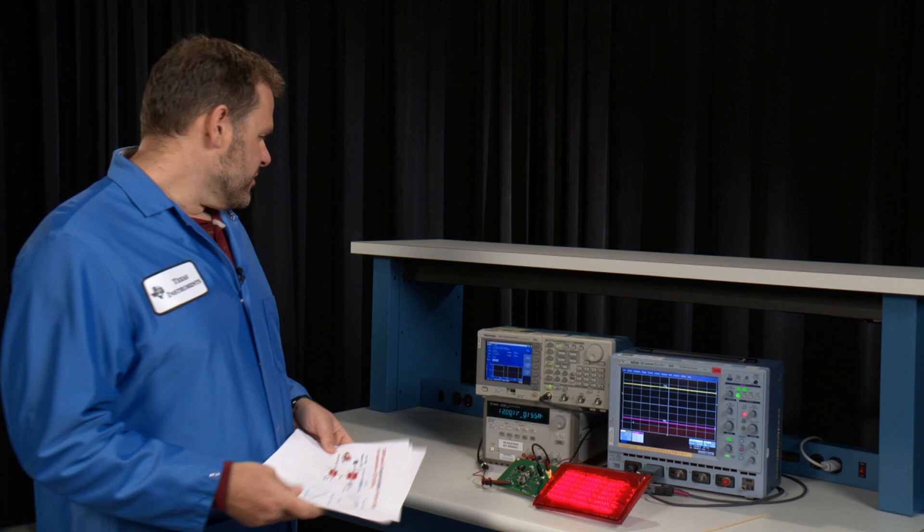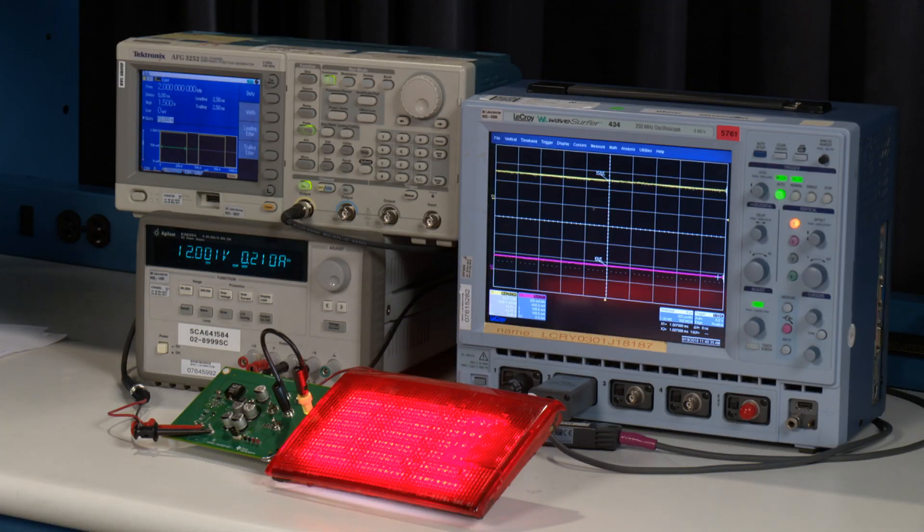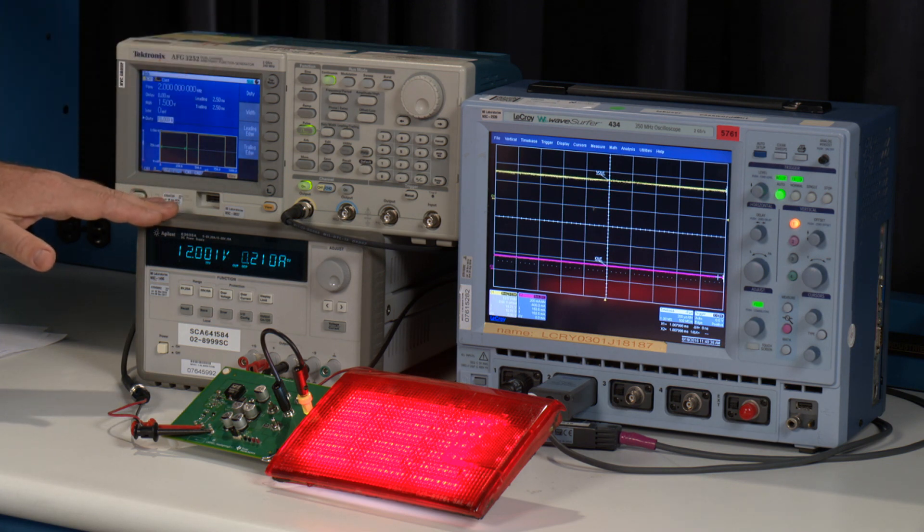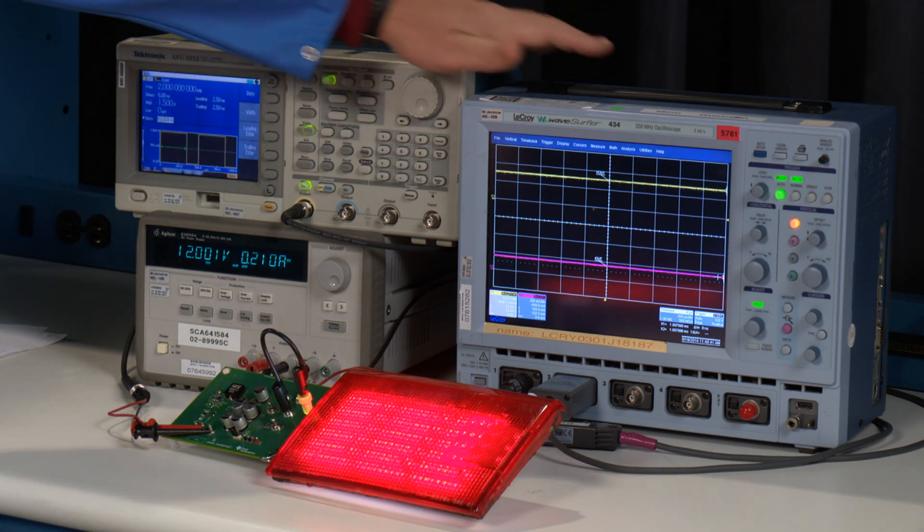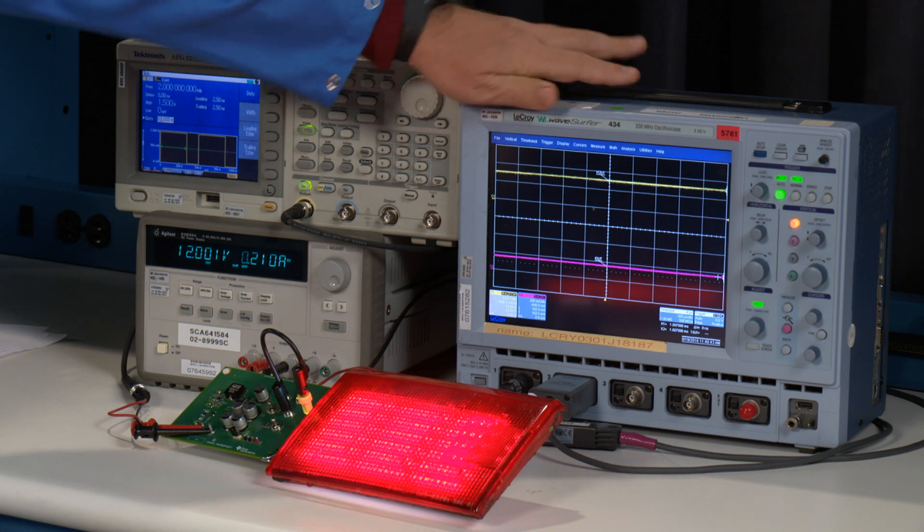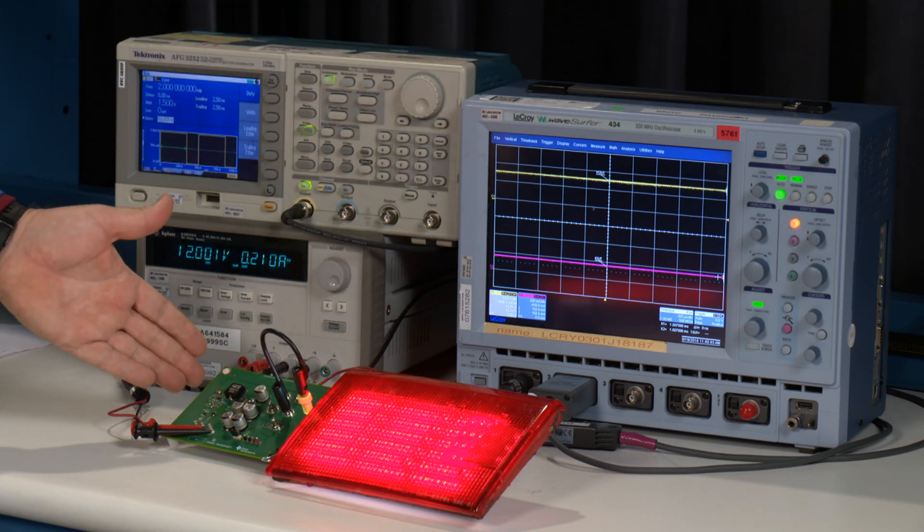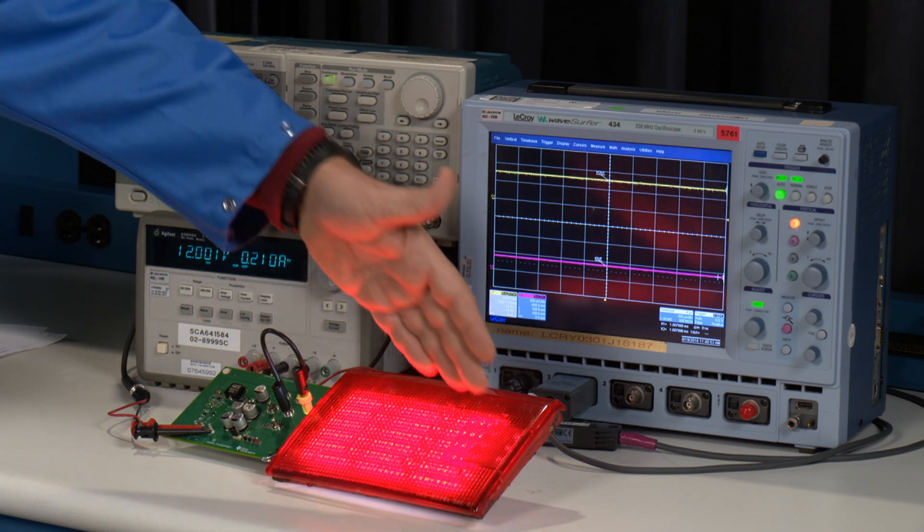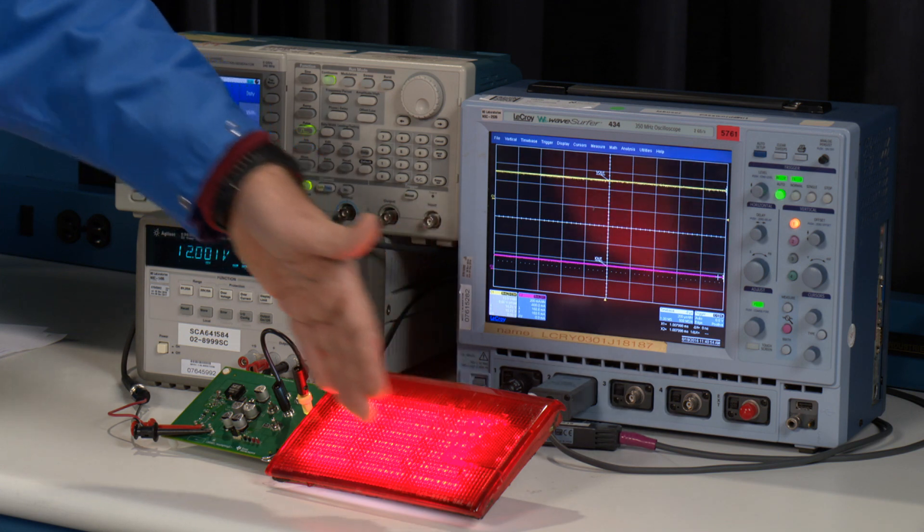So let me show you the reference design today. Over here, we have three bits of equipment. We have a pulse width modulator, the power supply, and the oscilloscope. Down here, we have the reference design using the LM3481 and a mock-up of a rear light with a whole bunch of LEDs underneath it. You can see them illuminated.